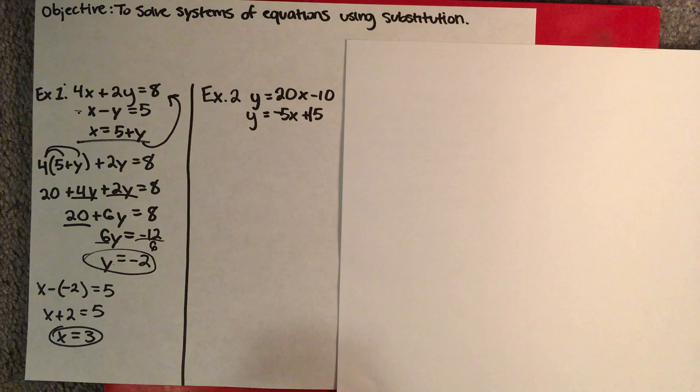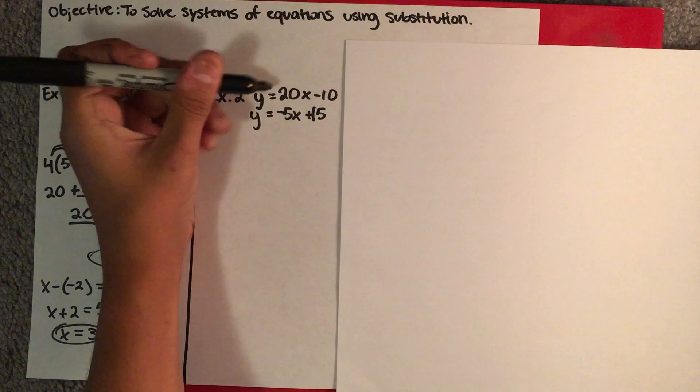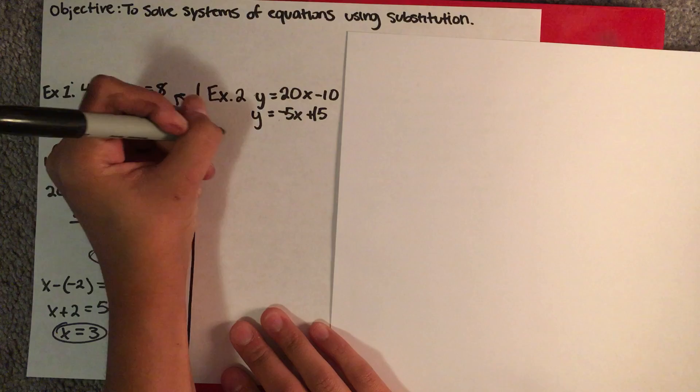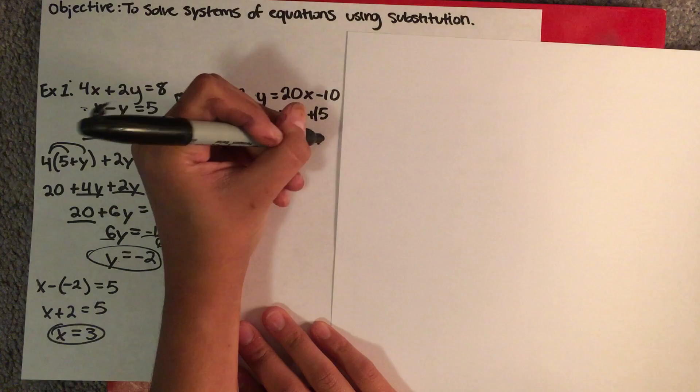Another example would be if you have two equations in slope-intercept form. It might seem harder, but it's actually easy because your variable — in this case y — is already solved for. Therefore, because y is equal to both of these, you can just set the two equations equal to each other.